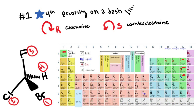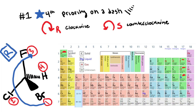Now I have to determine if this is R or S. Considering that the fourth priority group is on a dash, the only thing I have to do is determine if the numbers 1, 2, 3 are clockwise or counterclockwise. When I check, 1, 2, 3 are moving in a clockwise direction, so I can conclude that this molecule has an absolute configuration of R.